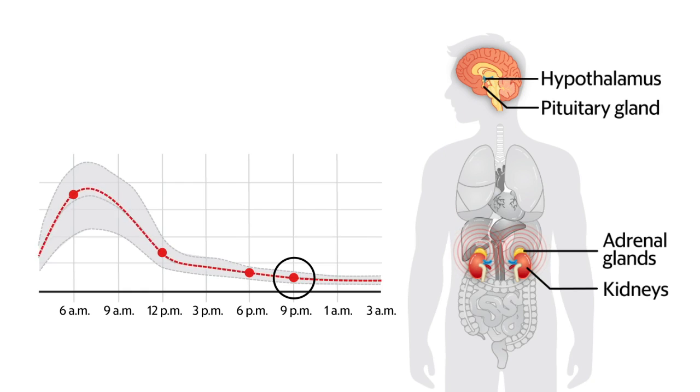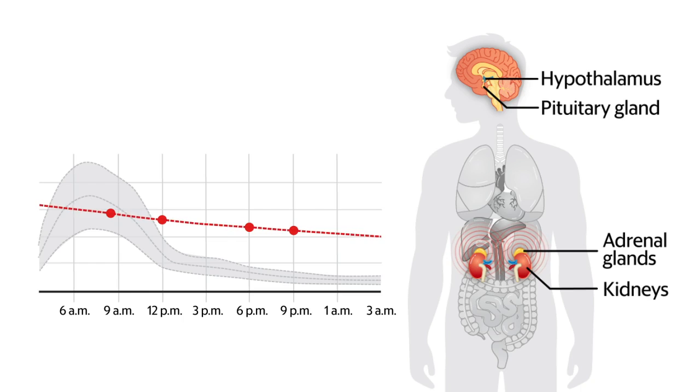By bedtime, cortisol levels will drop close to zero. Foster kids who have endured repeated trauma have their HPA axes thrown off kilter. Their bodies were in constant stress levels that pushed their HPA axis too hard and too fast. The result is a downshift in cortisol. The cortisol levels become flat. When they wake up, it's low, and at bedtime, it's not low enough.